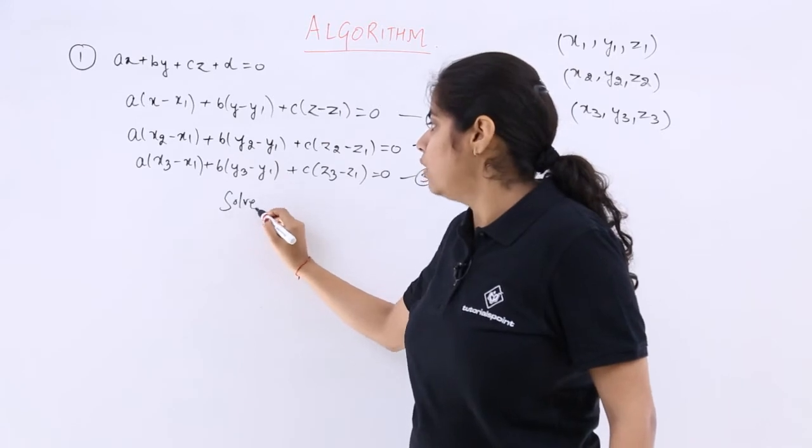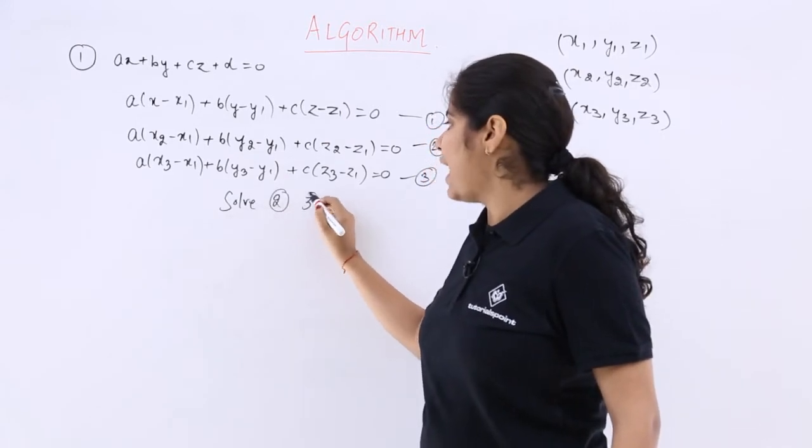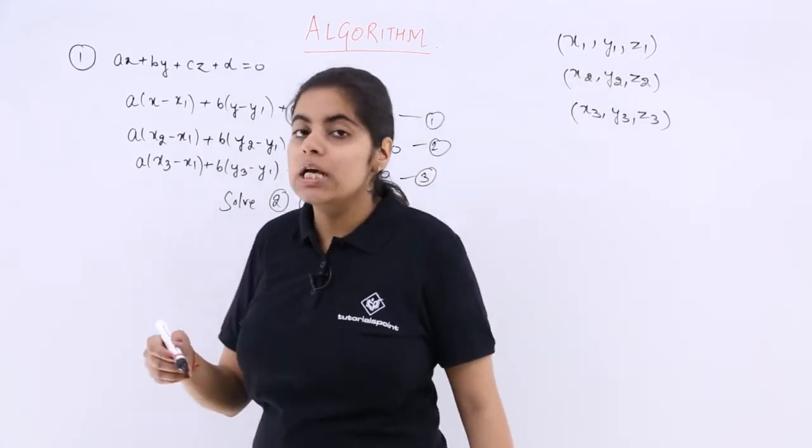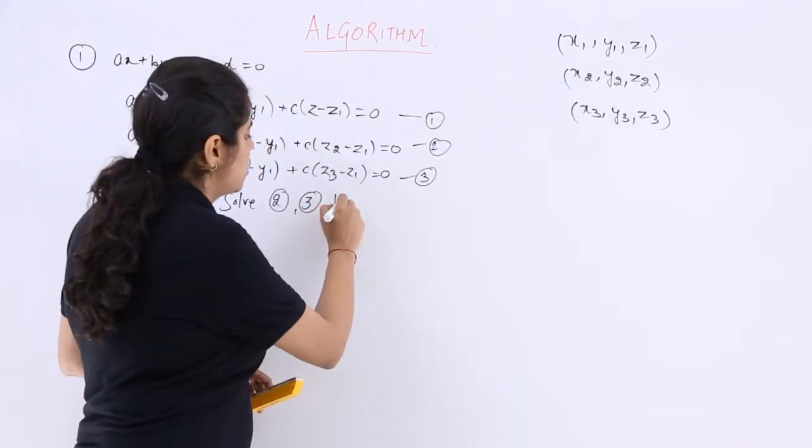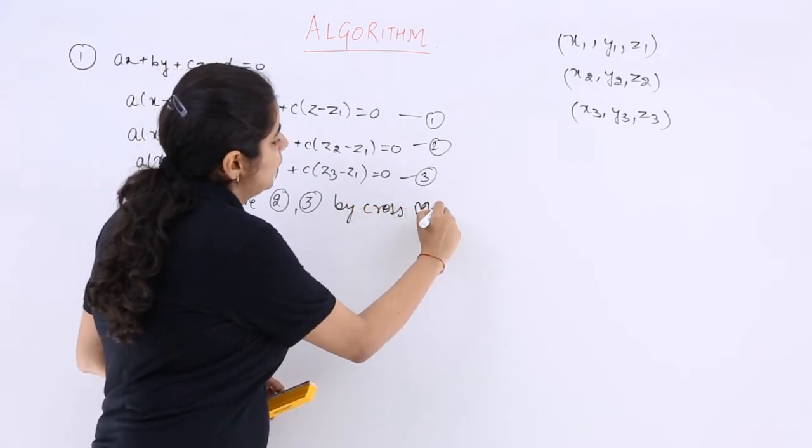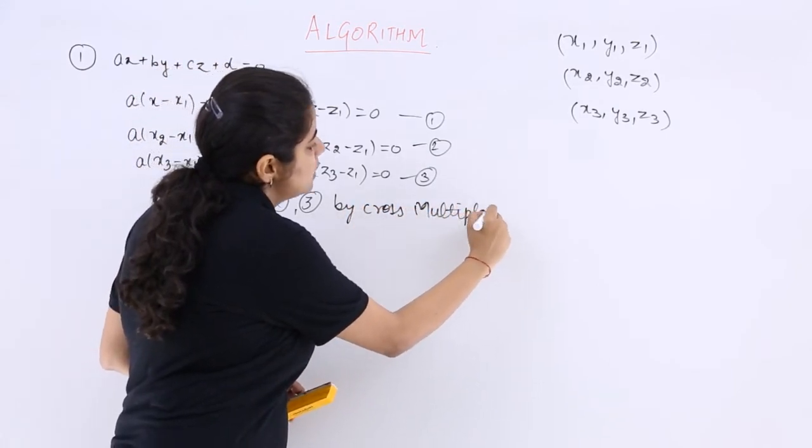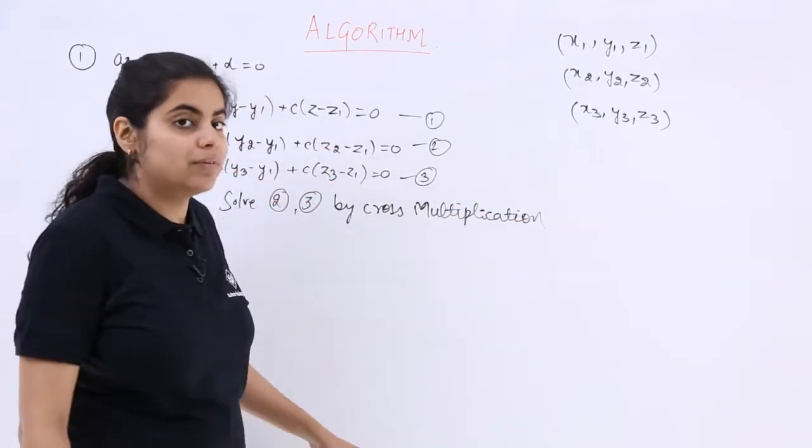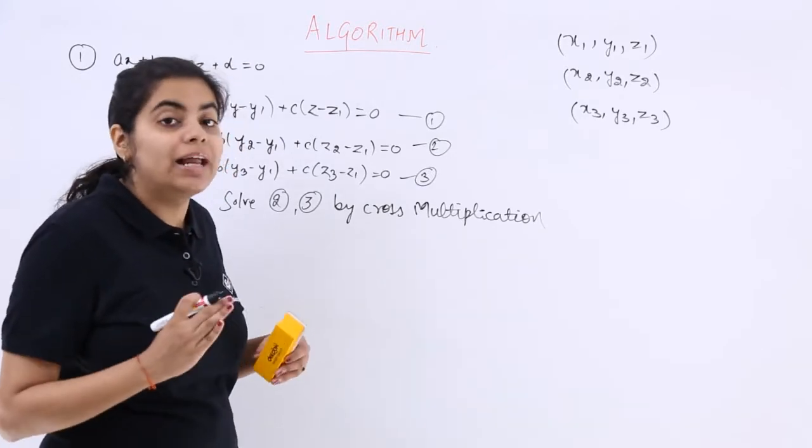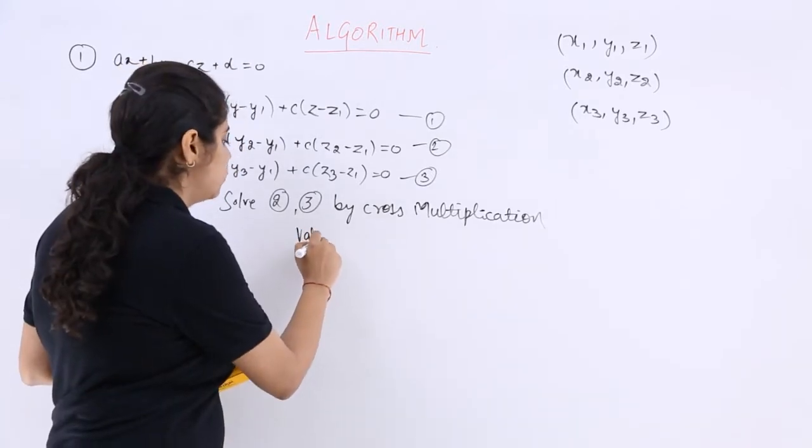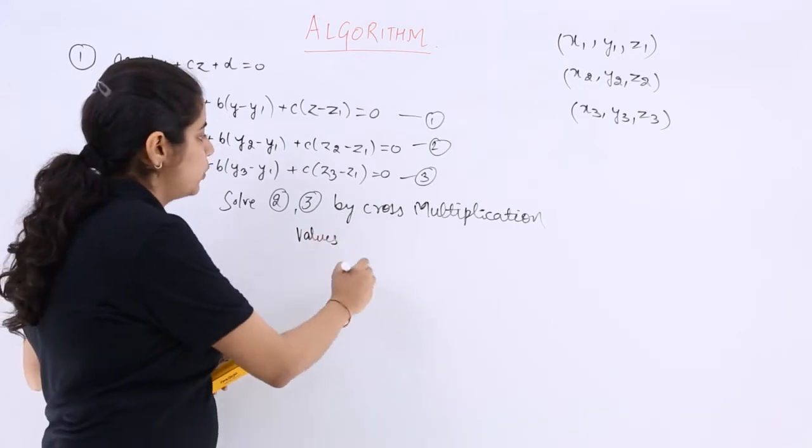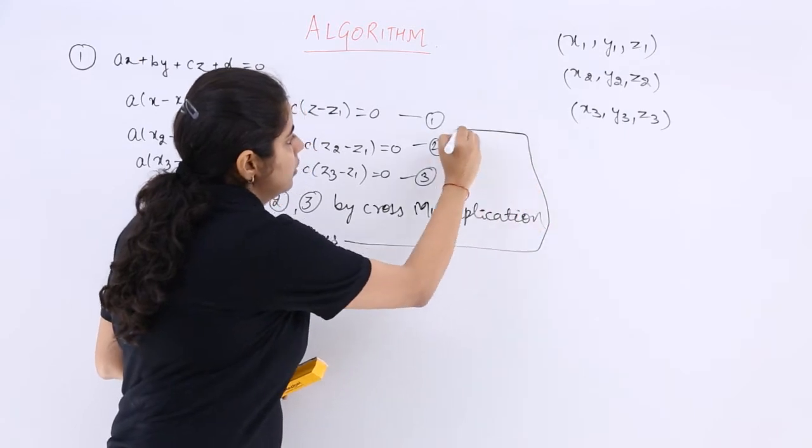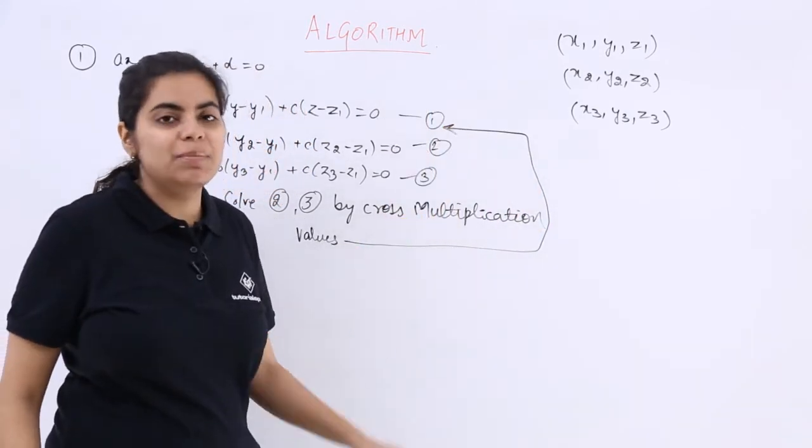Now the next step is you have to solve the equation number 2 and 3, and then by cross multiplication you are going to solve. So abc will be eliminated. So solve them by cross multiplication. Now when you solve by cross multiplication, these will get eliminated and whatever values you obtain, you are going to just put them in the equation number 1.